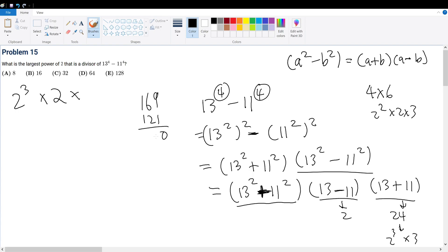So 169 plus 121 equals 290. 290 is equal to 2 times 145. And 145 is divisible by 5, so that's 2 times 5 times 29.